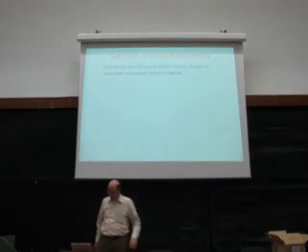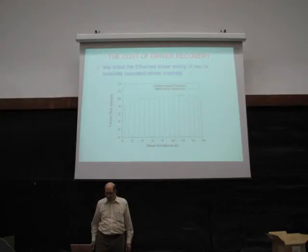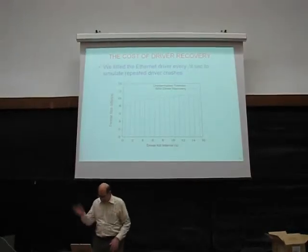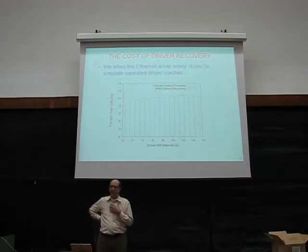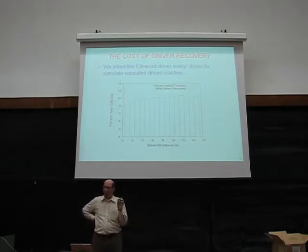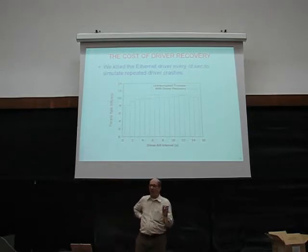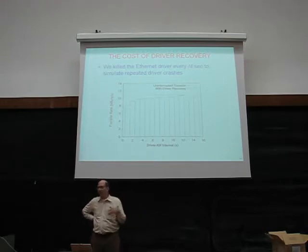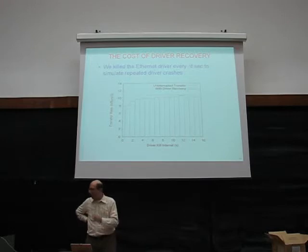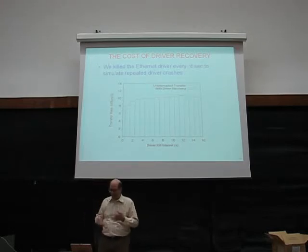For the cost of driver recovery, we simulated bugs by killing the driver every 10 seconds and every delta. Normally we can get about 88 megabits per second out of the fast Ethernet. If you kill the driver once a second, performance drops by about 30%. If you have a driver crashing every single second, you probably shouldn't expect great performance anyway. But if a Linux driver crashes, that's the end of the system — it stops. In our system, you get only 30% performance degradation, and if it only dies once every 10 seconds, you don't even notice.